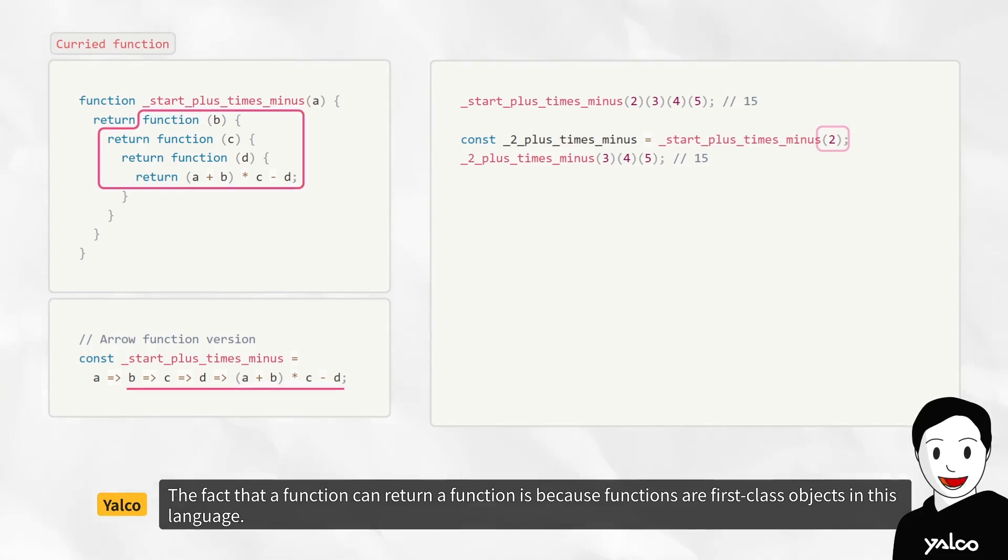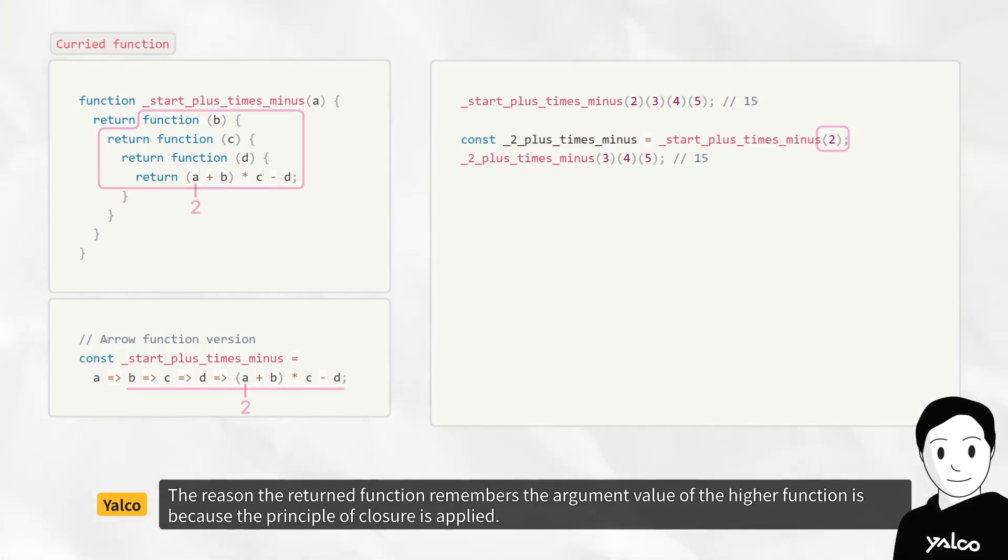The fact that a function can return a function is because functions are first class objects in this language. The reason the returned function remembers the argument value of the higher function is because the principle of closure is applied.